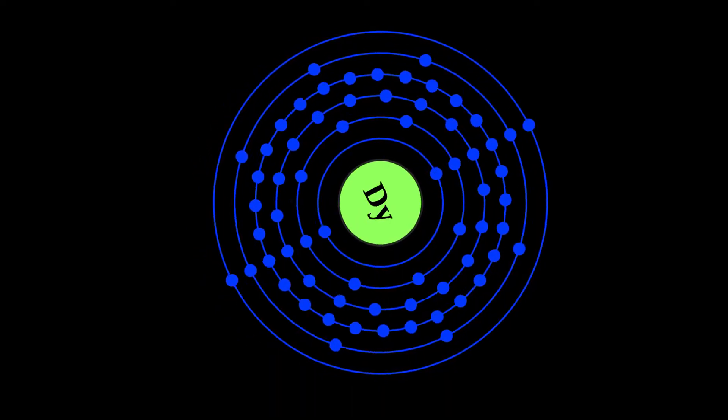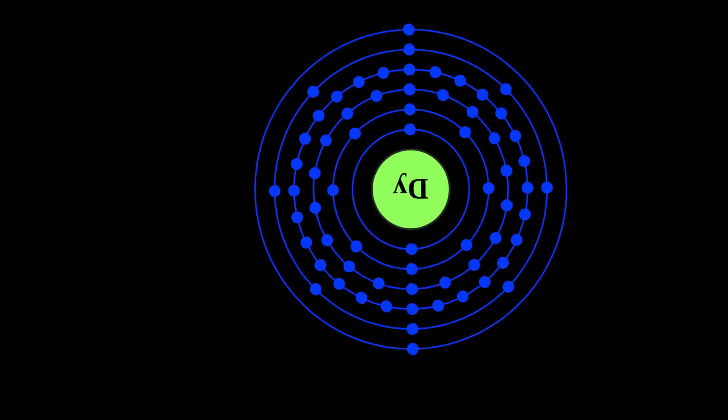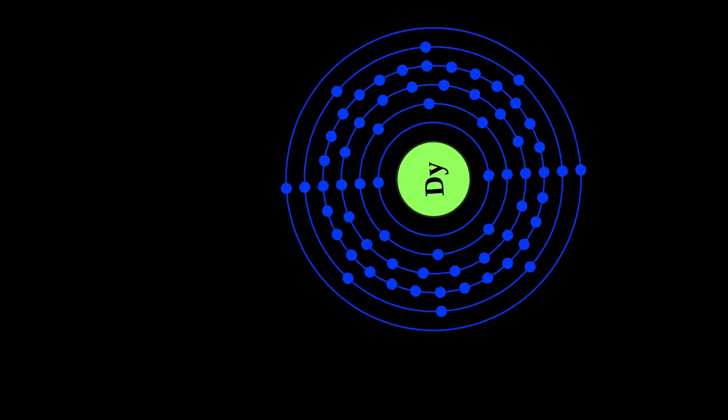Dysprosium is a chemical element with symbol Dy and atomic number 66. It is a rare earth element with a metallic silver luster.